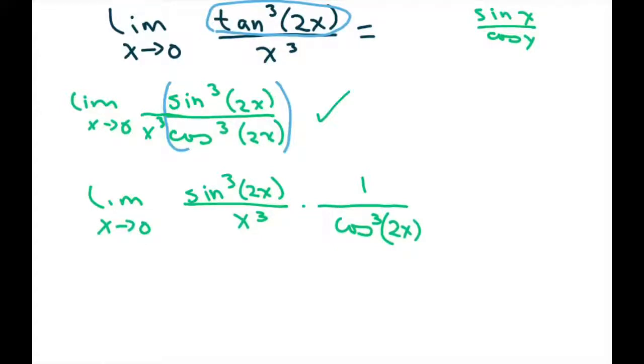Now what I want to do is make it look like sine of x divided by x. So we take the limit of this, we get 1. I'm going to multiply through by 8. So multiply through by 8, this piece right in here,